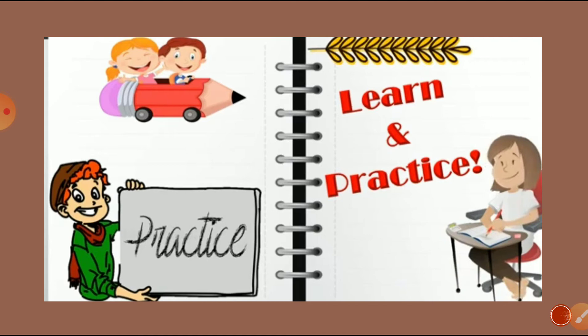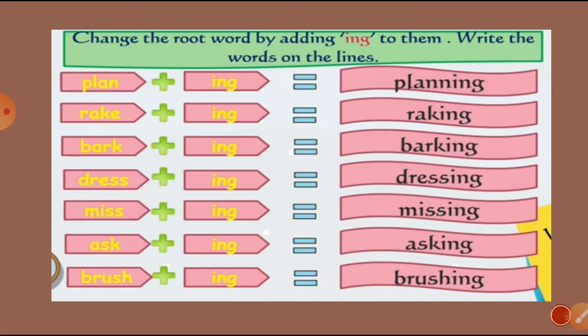Let's solve some exercises, students. Change the root word by adding ING to them. Write the words on the lines. Plan plus ING equals planning. Rake plus ING equals raking. Bark plus ING equals barking. Dress plus ING equals dressing.